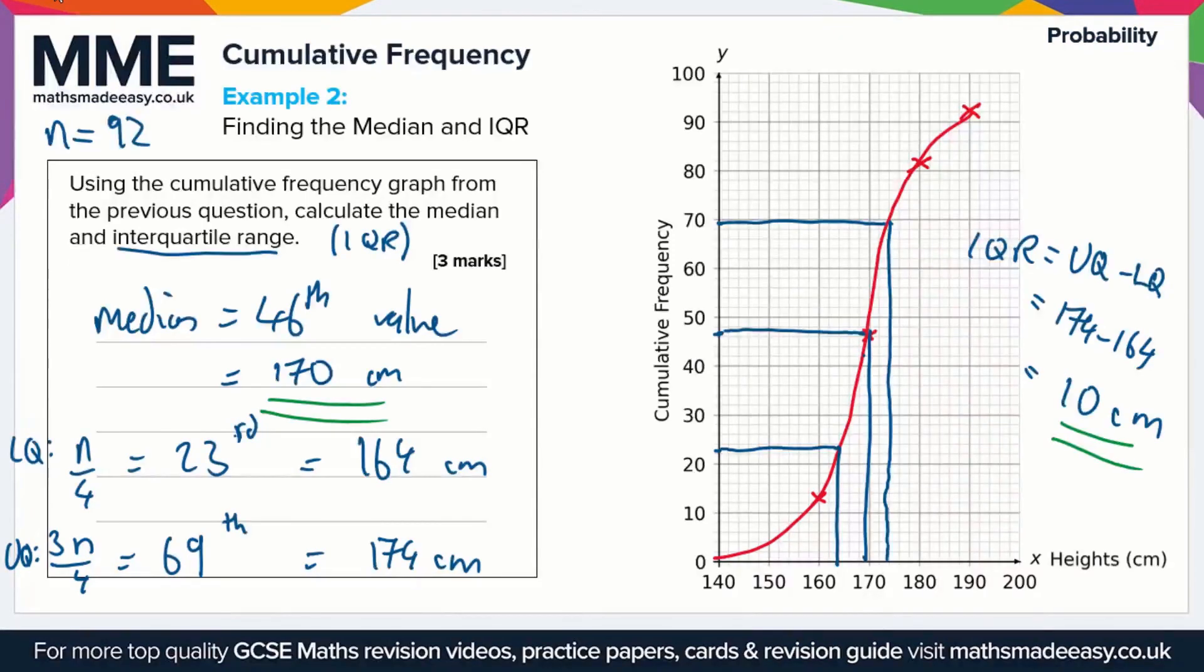Just one final point to note with this sort of thing is that the exact values you get for the median, the lower quartile, and the upper quartile might be slightly different to mine, and that all just depends on how you plot your cumulative frequency graph. So if your curve is slightly different to mine, then your values may come out slightly different to mine. There's usually a sort of ballpark figure that the mark schemes require, so as long as you're within say a couple of centimeters of each of these values, you should get all the marks.